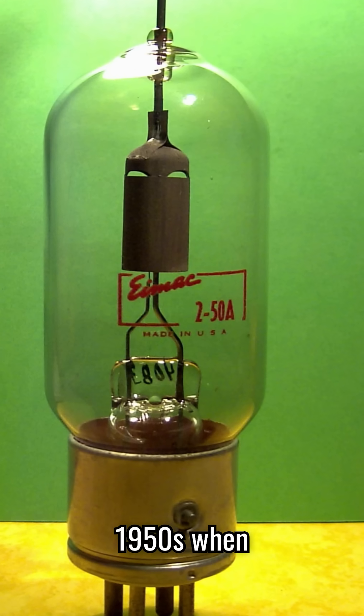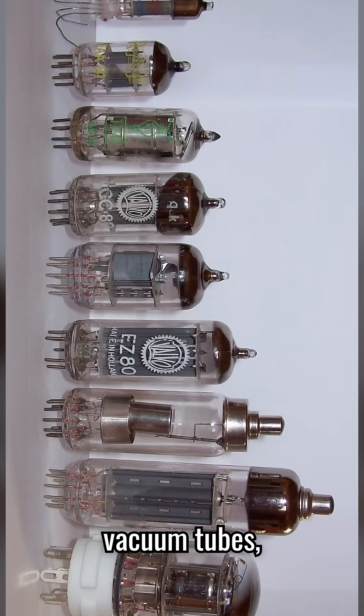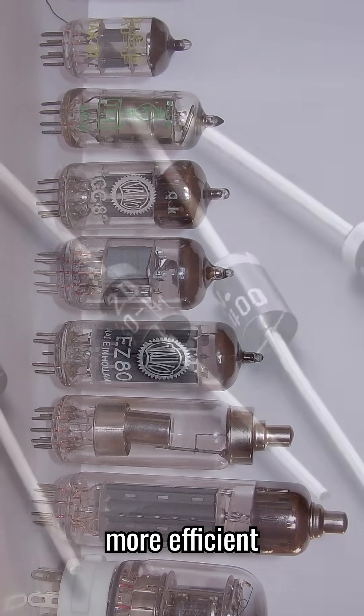Fast forward to the 1950s, when silicon and germanium diodes replaced bulky vacuum tubes, paving the way for smaller, more efficient electronics.